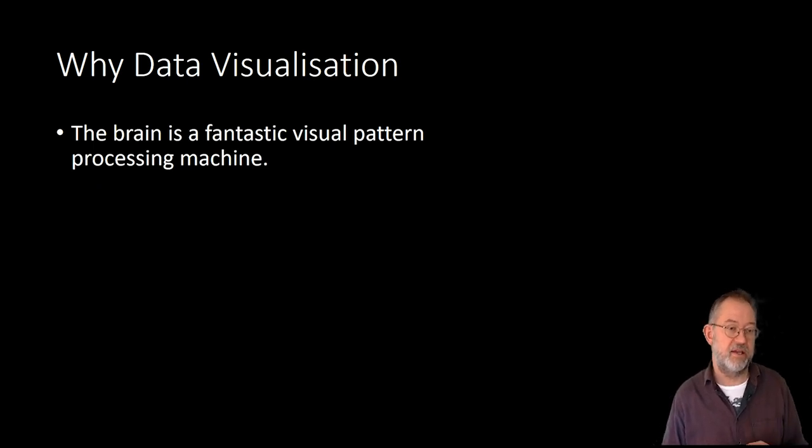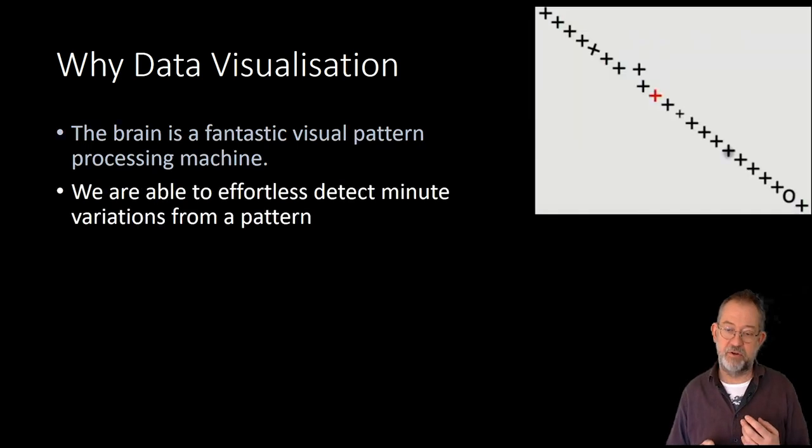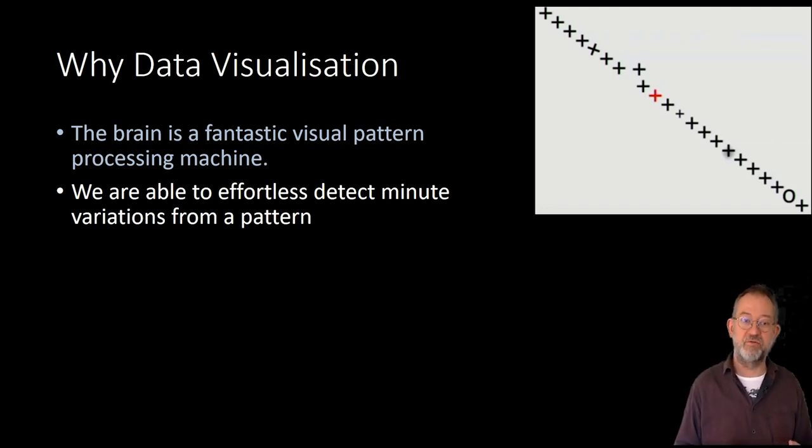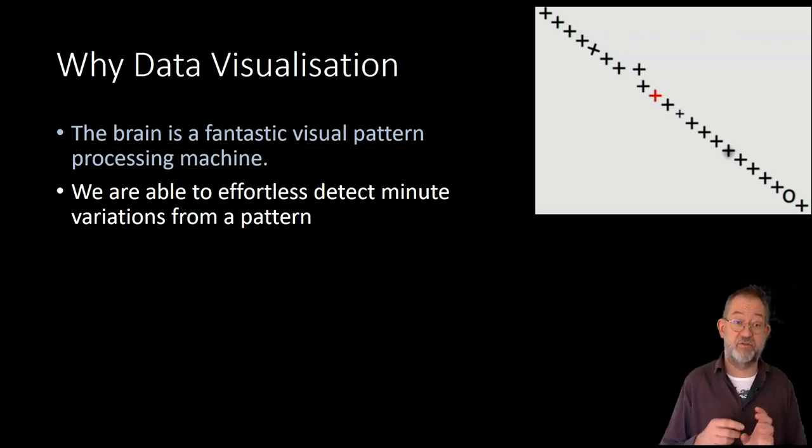So why do it? Well, first of all, the brain is a fantastic visual pattern processing machine. If you just look at a pattern like this, we can effortlessly detect small variations. We're not in doubt that there's a red one, there's one that's a bit of out of line, there's one that's a bit smaller, there's one that's a zero, and there's one that's at a bit of an angle. So all these things we can see in a fraction of a second. We don't have to be conscious about it because this is so much built in to the way that our brain functions.